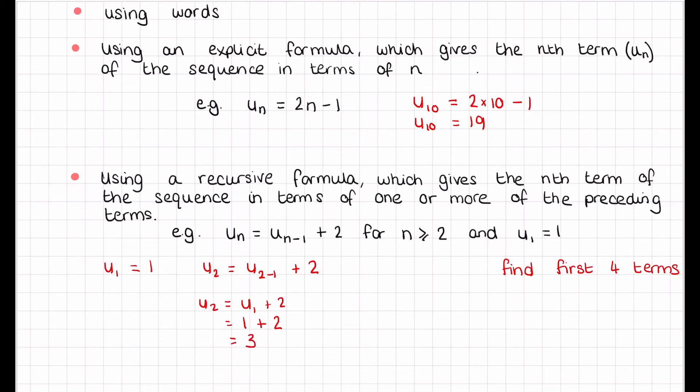For u3, we have u(3-1) + 2, which equals u2 + 2. Since u2 = 3, this gives us 3 + 2, so u3 = 5.